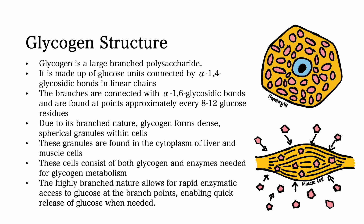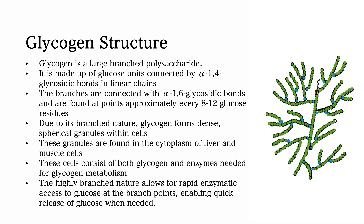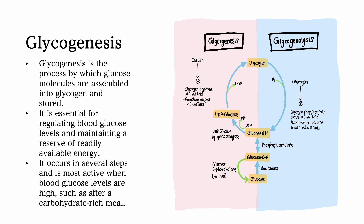These granules are found in the cytoplasm of liver and muscle cells. These liver and muscle cells consist of both glycogen and enzymes needed for glycogen metabolism. The highly branched nature also allows for rapid enzymatic access to glucose at the branch points, enabling quick release of glucose when needed.